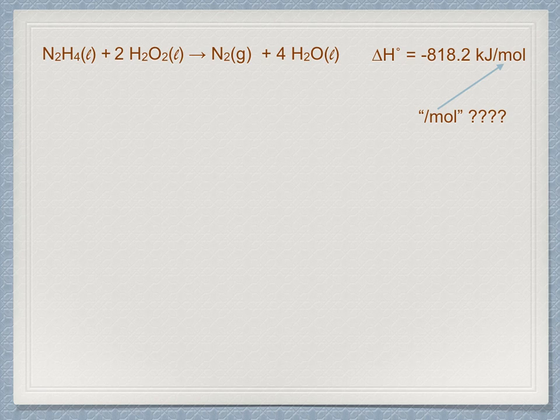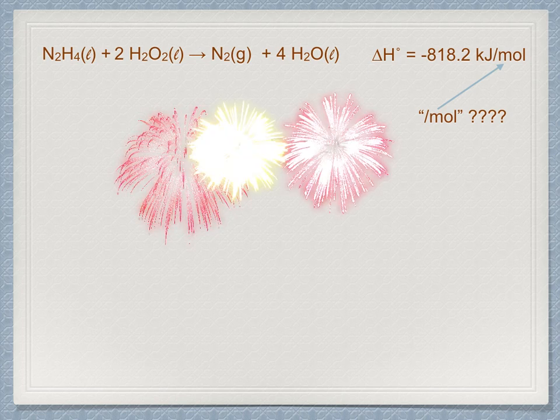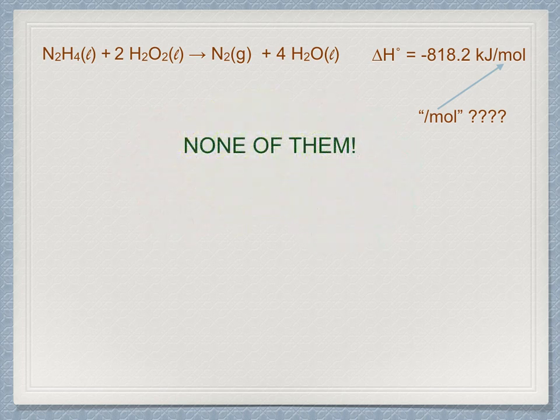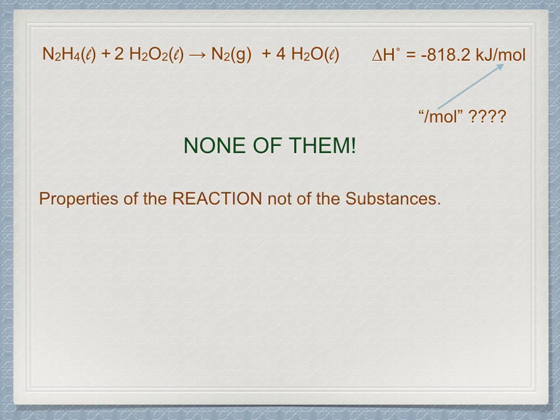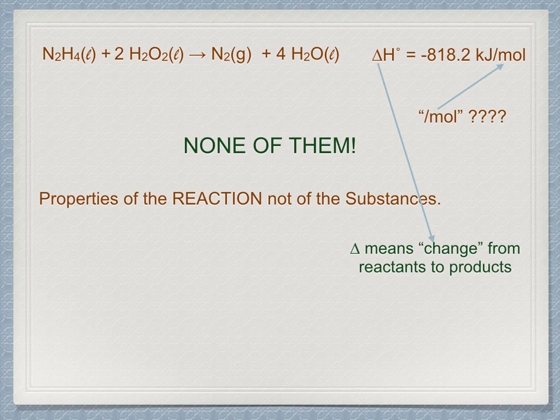The answer is none of them. The thermodynamic properties are properties of the reaction, not of a substance. That is what the delta implies—it is about the change from reactants to products. When this reaction occurs one mole times, then 818 kilojoules per mole of enthalpy is released.